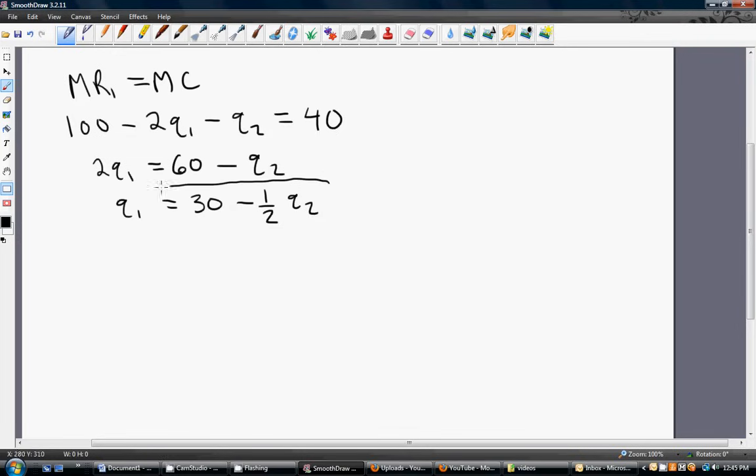And there you go. You have the output of firm 1 equaling 30 minus the output, or half the output, of firm 2.